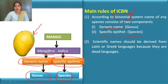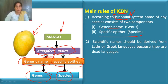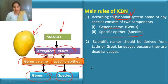In binomial nomenclature, every scientific name has two components. The first is the generic name, which tells us which genus the individual belongs to — genus being a taxonomic category. The second is the specific epithet, representing the species. Knowing genus and species allows us to define the general features, characters, and similarities of the individual. This is the first rule of ICBN — International Code of Binomial Nomenclature.